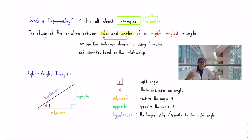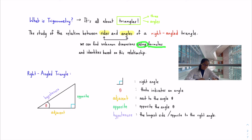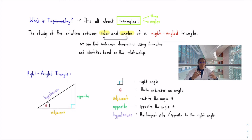The Greek words 'trigonon' and 'metron' translate to 'triangle measure,' so trigonometry is all about triangles — more specifically, the right angle triangle. Trigonometry is the study of the relationship between the sides and angles of a right angle triangle. We can find unknown dimensions using formulas and identities based on this relationship, and everything in this topic is connected.